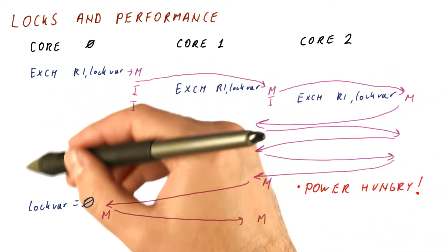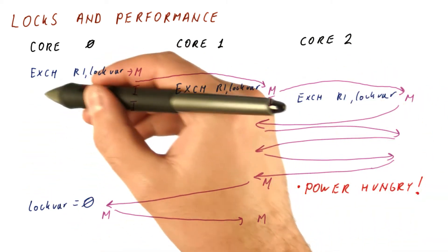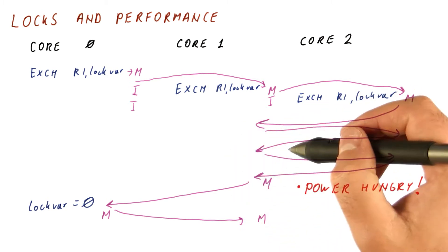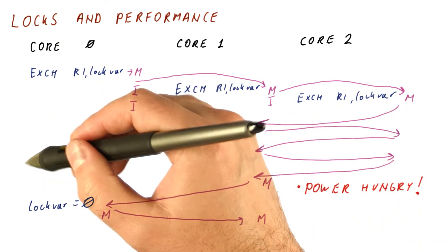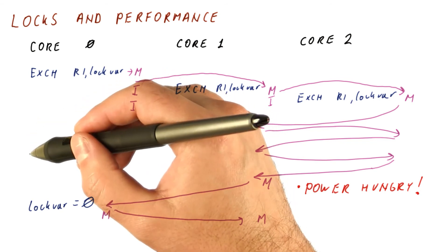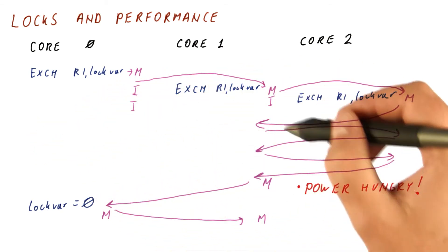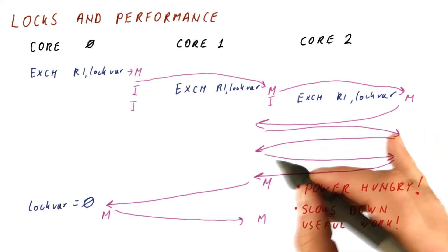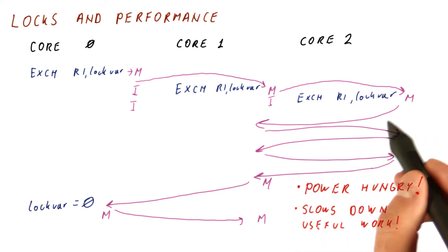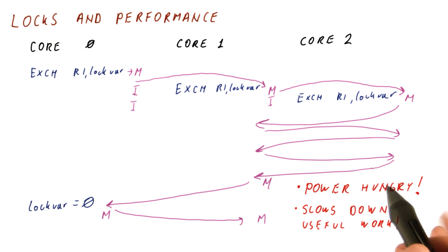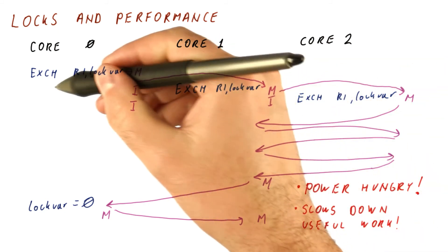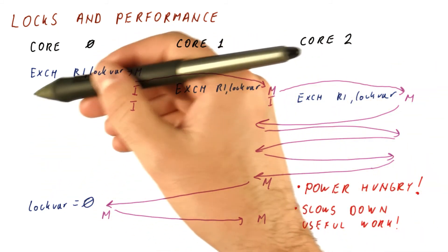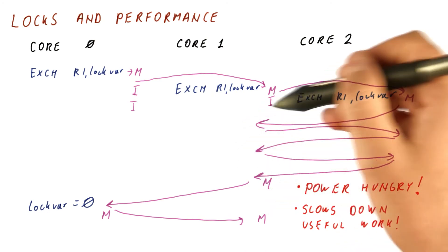So the one core that is actually doing useful work while this is going on, if it has a cache miss, will now be slower in handling that cache miss because it has to wait for the busy bus that these two are keeping busy. So not only is it power hungry to do this, but also by busy waiting in such an active way, we're slowing down the useful work that is the only thing that can really result in us actually getting the lock eventually.